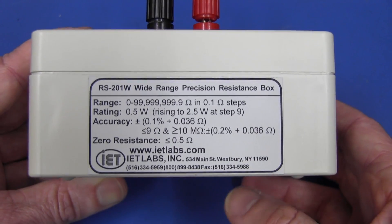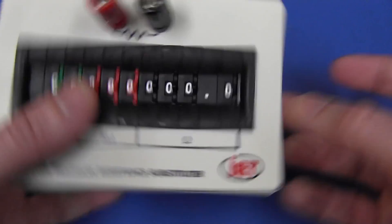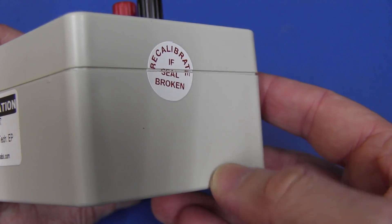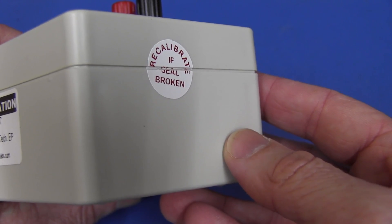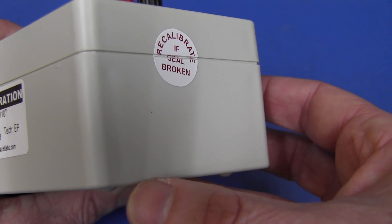But it's manufactured by IET Labs. I haven't looked at any of their gear before, but based on outside, it's quite nice. And the best part about taking anything apart is of course breaking the calibration seal. Recalibrative seal broken my ass. Let's crack this thing open.